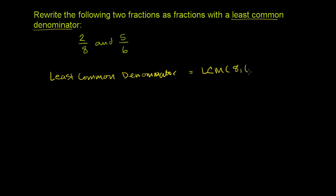The least common multiple of 8 and 6. And a couple of ways to think about least common multiple. You literally could just take the multiples of 8 and 6 and see what their smallest common multiple is. So let's do it that way first.